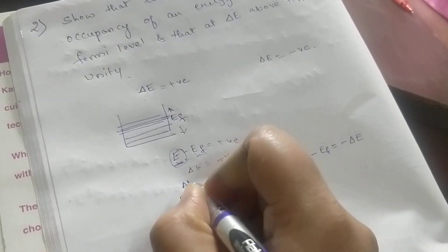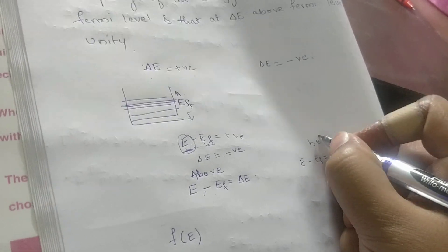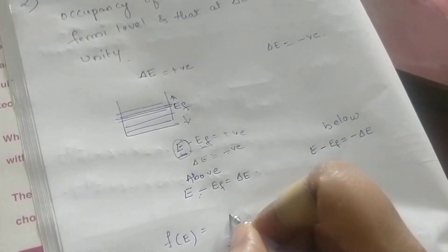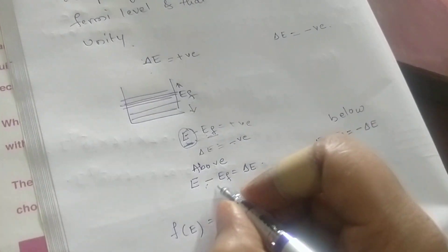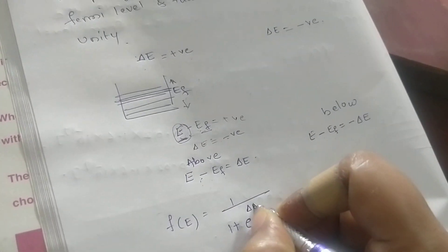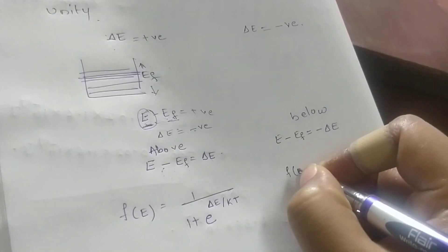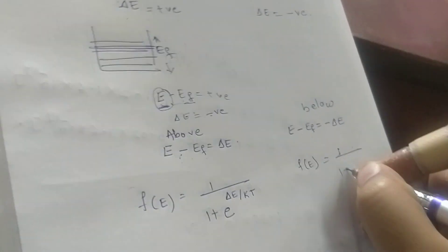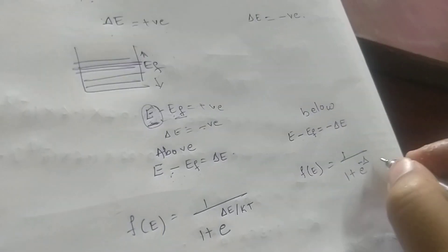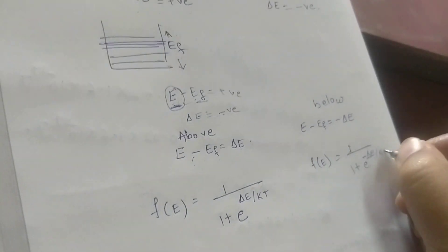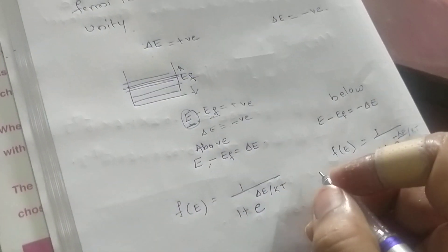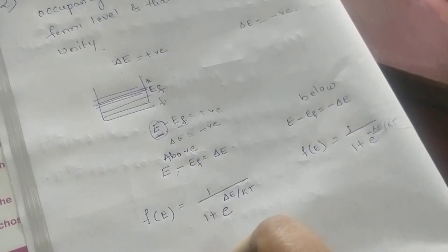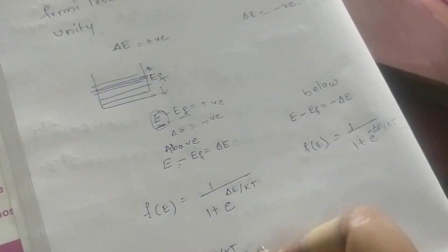So we will write f(E) for above the Fermi level and f(E) for below the Fermi level. Above the Fermi level: f(E) = 1 over (1 plus e to the power delta E by kT). Below the Fermi level: f(E) = 1 over (1 plus e to the power minus delta E by kT). For simplification, we substitute e to the power delta E by kT as x.